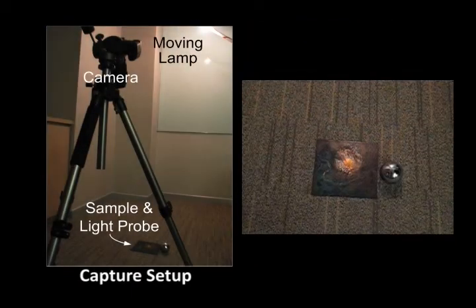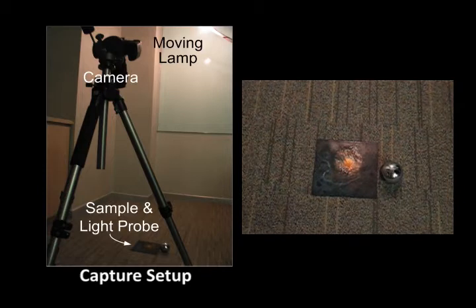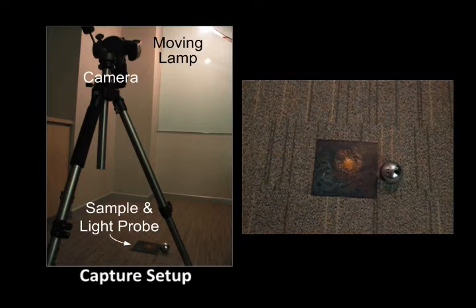To capture the reflectance image in the second phase, we use a digital camera and a movable lamp. Arbitrary background lighting is taken into account in data processing. A light probe beside the target sample records each lighting condition.